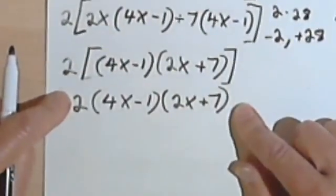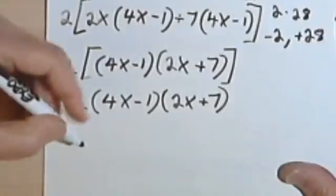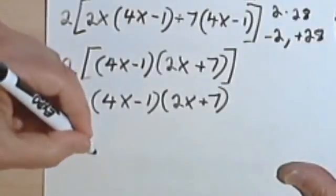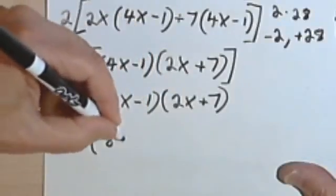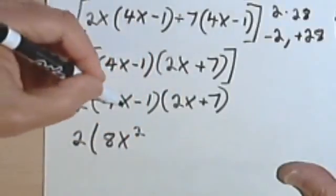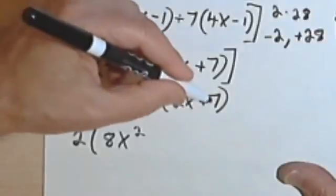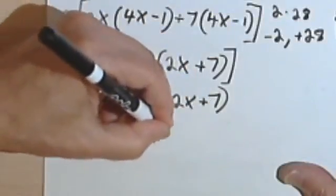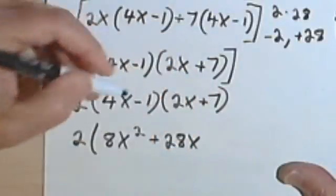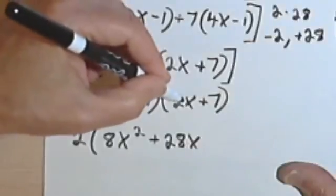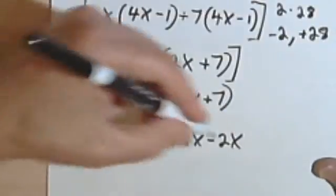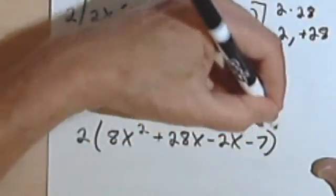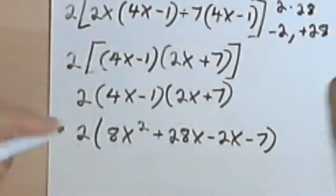Let's multiply it all back just to make sure. So I'm going to have 2 times... 4x times 2x is 8x squared. 4x times 7 is 28x. Negative 1 times 2x is negative 2x. And my last two numbers are negative 1 and 7, so that's negative 7.